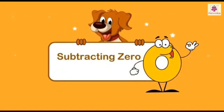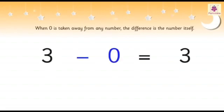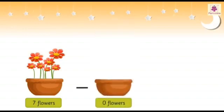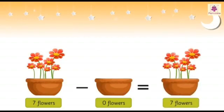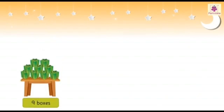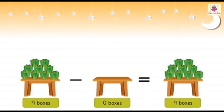Subtracting 0: we know that 0 means no object. So when 0 is taken away from any number, the difference is the number itself. For example, from a bunch of 7 flowers, if we take away 0 flowers, there will still be 7 flowers — as 7 minus 0 is equal to 7. Similarly, if 0 boxes are taken away from 9 boxes, 9 minus 0 is equal to 9 boxes.